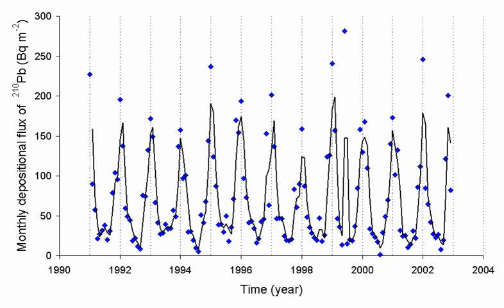222Rn belongs to the radium and uranium-238 decay chain, and has a half-life of 3.8235 days. Its four first products are very short-lived, meaning that the corresponding disintegrations are indicative of the initial radon distribution. Its decay goes through the following sequence: 222Rn, 3.82 days, alpha decaying to 218Po, 3.10 minutes, alpha decaying to 214Pb, 26.8 minutes, beta decaying to